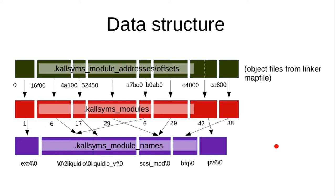I don't think there's any real worry about ambiguity for data symbols. Are there even any duplicates? Not for globals. And how many globals are there really? I haven't counted — I only counted function symbols.